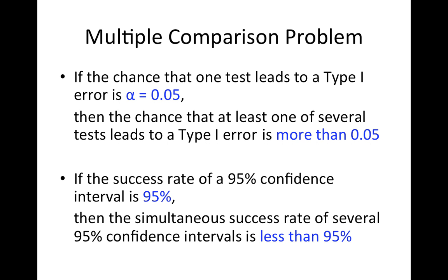Similarly, if the probability that a confidence interval covers a true value is 95%, then if me and all my friends make confidence intervals, the probability that we're all going to cover the true value is less than 95%, because we each have a 5% error rate.